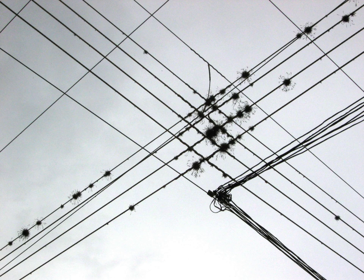A wire is a single, usually cylindrical, flexible strand or rod of metal. Wires are used to bear mechanical loads or electricity and telecommunications signals. Wire is commonly formed by drawing the metal through a hole in a die or draw plate.